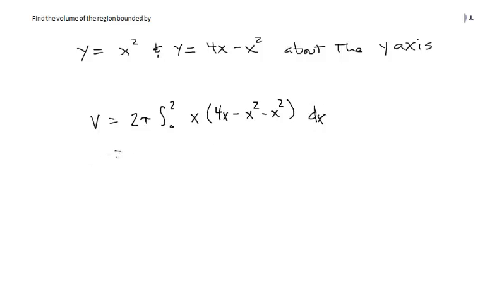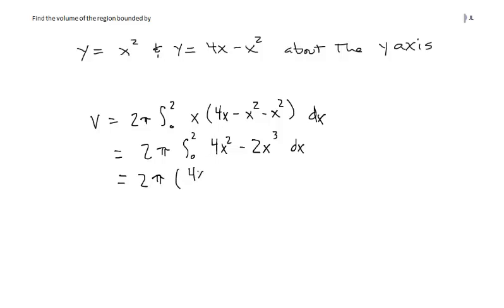Now we simplify: we have 2π times the integral from 0 to 2. Multiplying x times 4x gives 4x squared, and x times negative 2x squared gives minus 2x cubed dx. Now we can integrate: 2π times (4x cubed over 3 minus 2x to the fourth over 4), evaluated from 0 to 2.